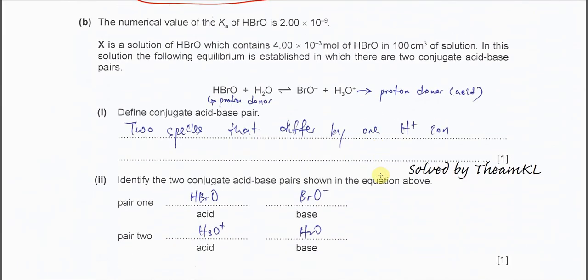Part B. Ka is given for HBrO — this value is 2 times 10 to the negative 9. Solution X is a pure acid solution containing 4 times 10 to the negative 3 moles in 100 cm³, so we can calculate the actual concentration in mol per dm³.